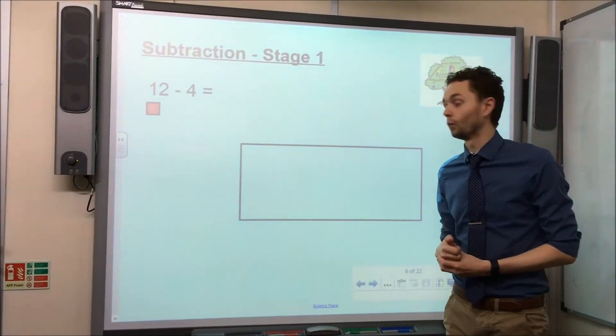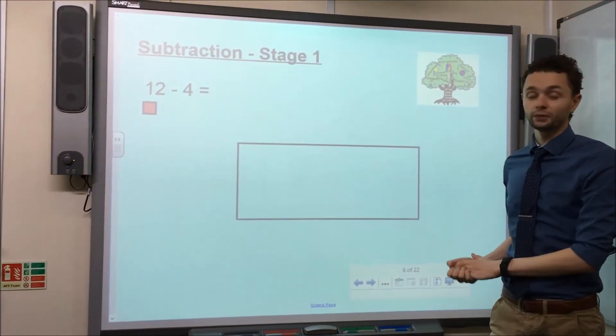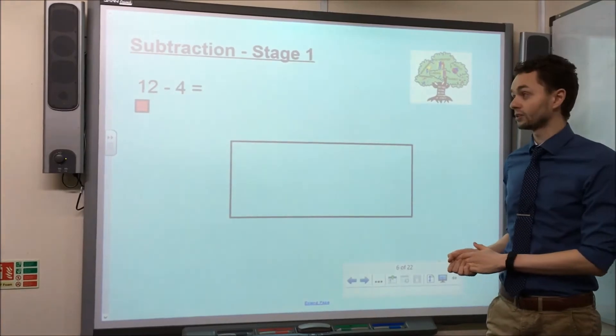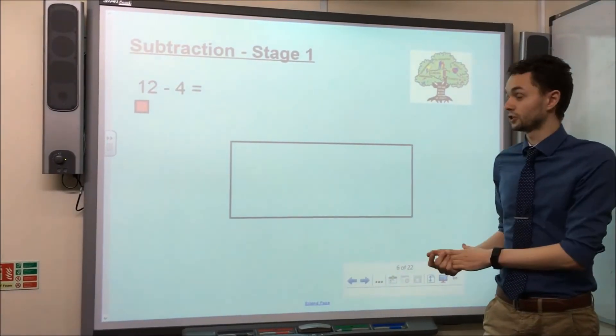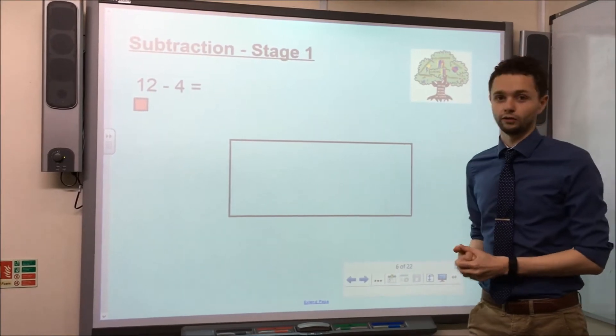So let's have a look at how that works. We've got our calculation here, 12 take away 4. So the first step would be to count out the amount of objects for the first number. The first number here is 12, so I'm going to count out 12 objects.